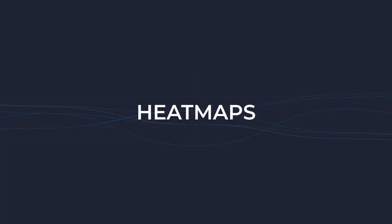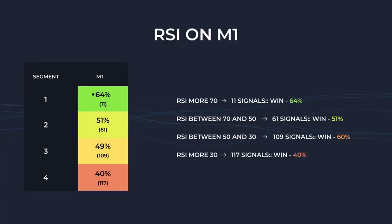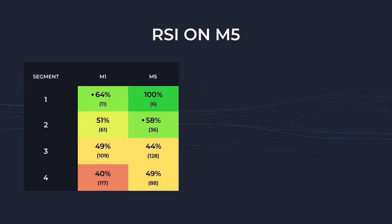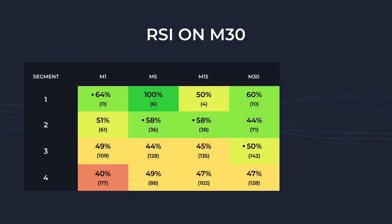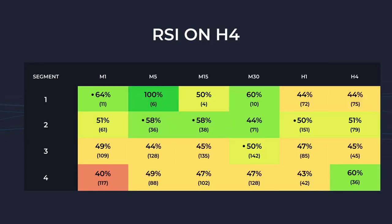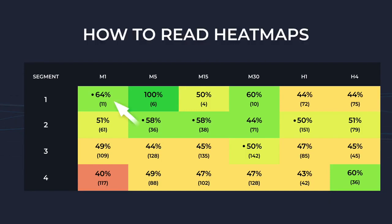You already know how to calculate statistics by the values of a technical indicator, but we only considered the one-minute chart. We can also calculate statistics for all chart periods: 5 minutes, 15 minutes, 30 minutes, 1 hour, and 4 hours. For convenience, cells with values are colored in yellow, green, and red depending on the statistical values. As a result, a heat map of successfully completed signals is obtained.